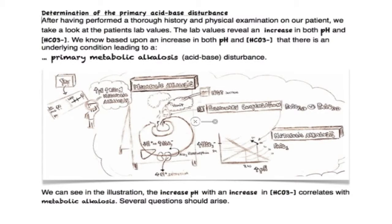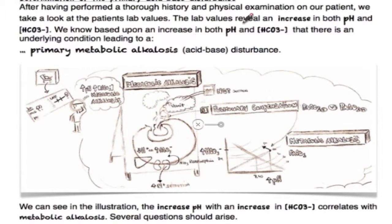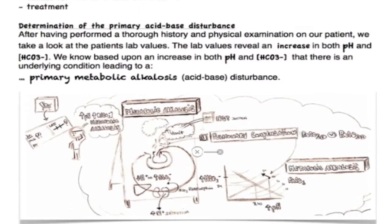Suppose after having performed a thorough history and physical examination of our patient, we take a look at the patient's lab values, and the lab values reveal an increase in both the pH and the bicarb concentration. We know based upon an increase in both the pH and the bicarb, that there's an underlying condition leading to primary metabolic alkalosis.